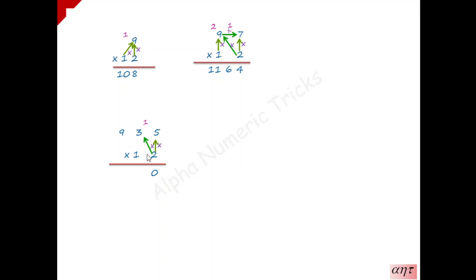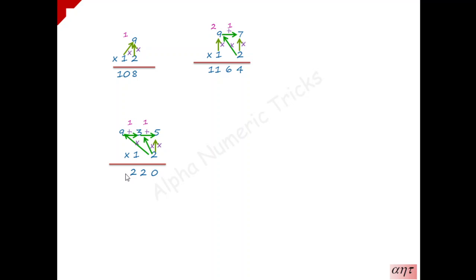Next, multiply 3 into 2, which is 6, and that 6 is added with the immediate right number of 3, which is 5 — so 6 plus 5 is 11. That 11 is added with the carry forward number 1, giving 12 — 2 is written, 1 is carry forward. Now 2 is multiplied with the last number in the multiplicand, 9, which is 18, and this 18 is added with the immediate right number 3.